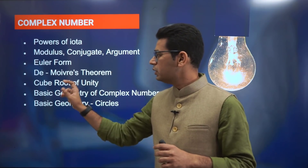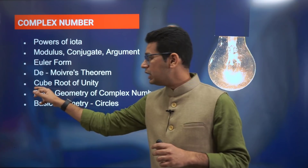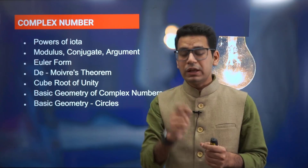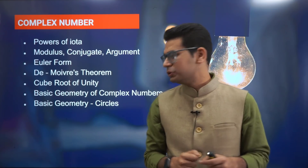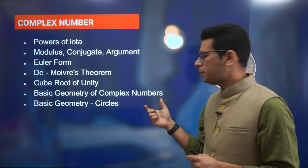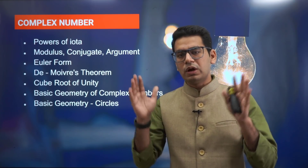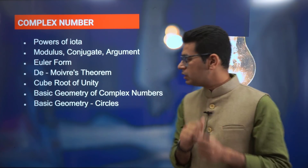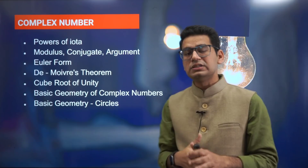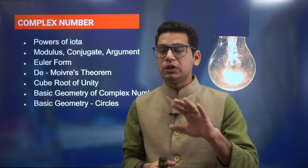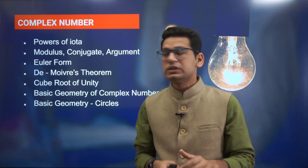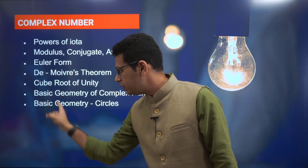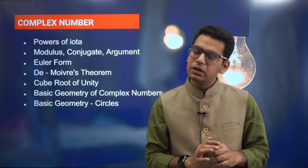De Moivre's theorem and cube root of unity — this topic is not mentioned in the information brochure syllabus, but you will have to do it because it is intrinsically asked in questions. Basic geometry of complex numbers: what does |z1 - z2| mean — that is the distance between point A and point B, or the length of the line segment. Similarly, basic geometry with regard to circles — |z - z0| = r represents the equation of a circle. If you know this, you will be rock solid in complex numbers.